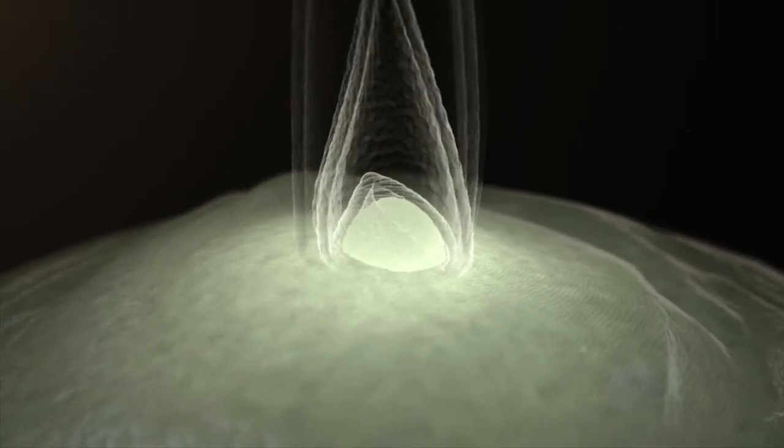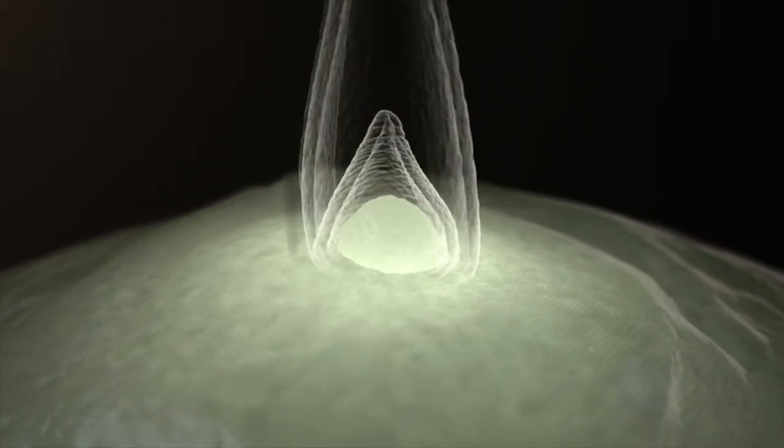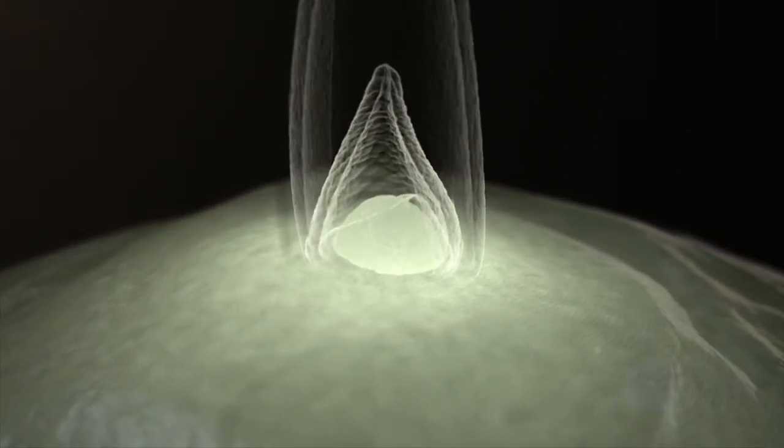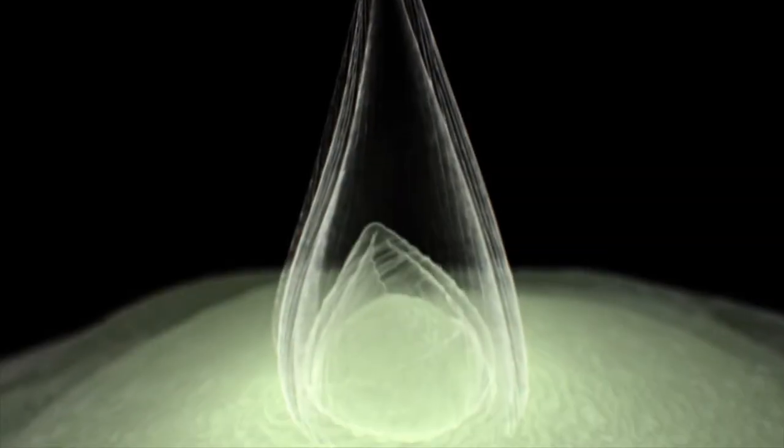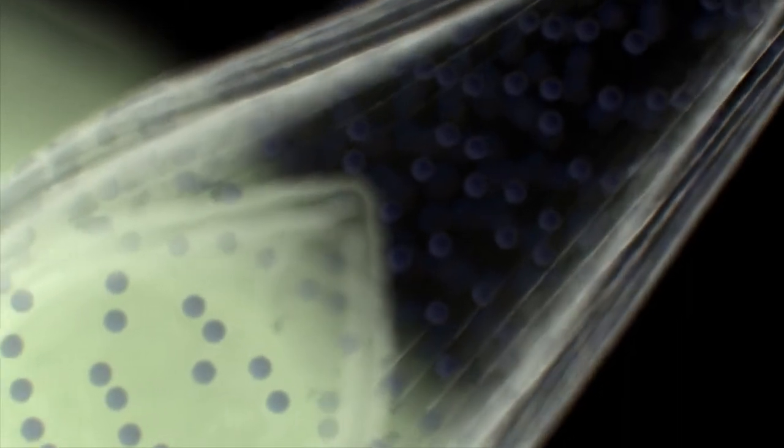Immature cells in a young leaf first grow by cell division and then they expand and differentiate. At the base of the leaf, young cells get ready to divide by positioning the nucleus near the middle of the cell.